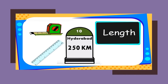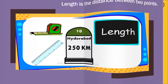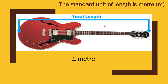Length. Have you seen the distance between two cities on signboards — for example, 250 kilometers to Hyderabad? The distance between two cities, two points, or even your height is a length. So we can say that length is the distance between two points. The standard unit of length is the meter — for example, this guitar is approximately one meter long.